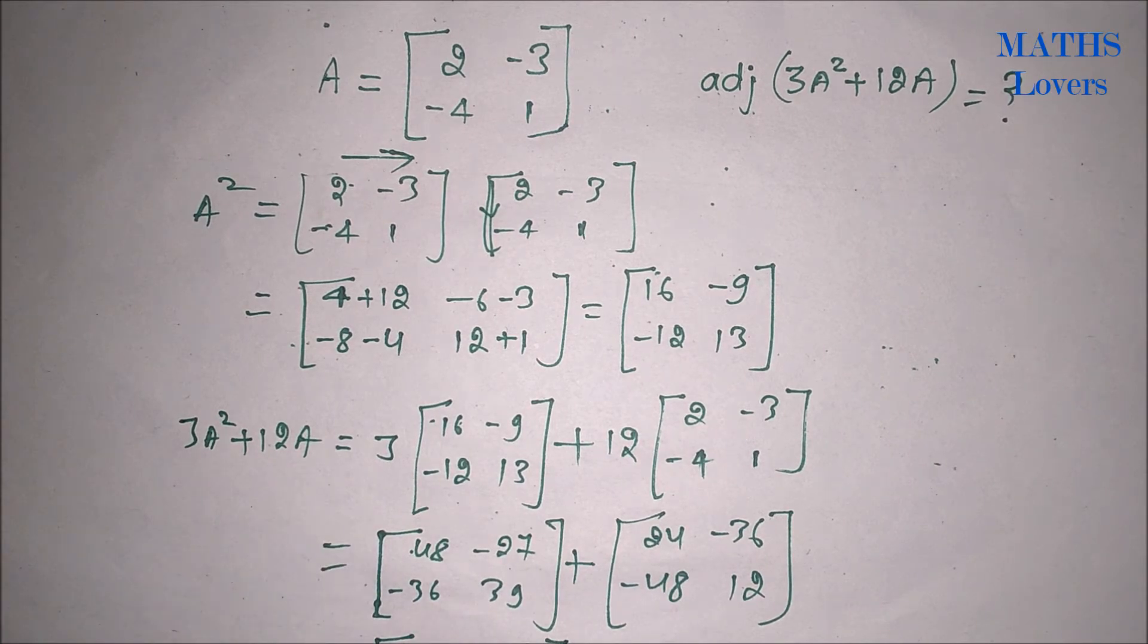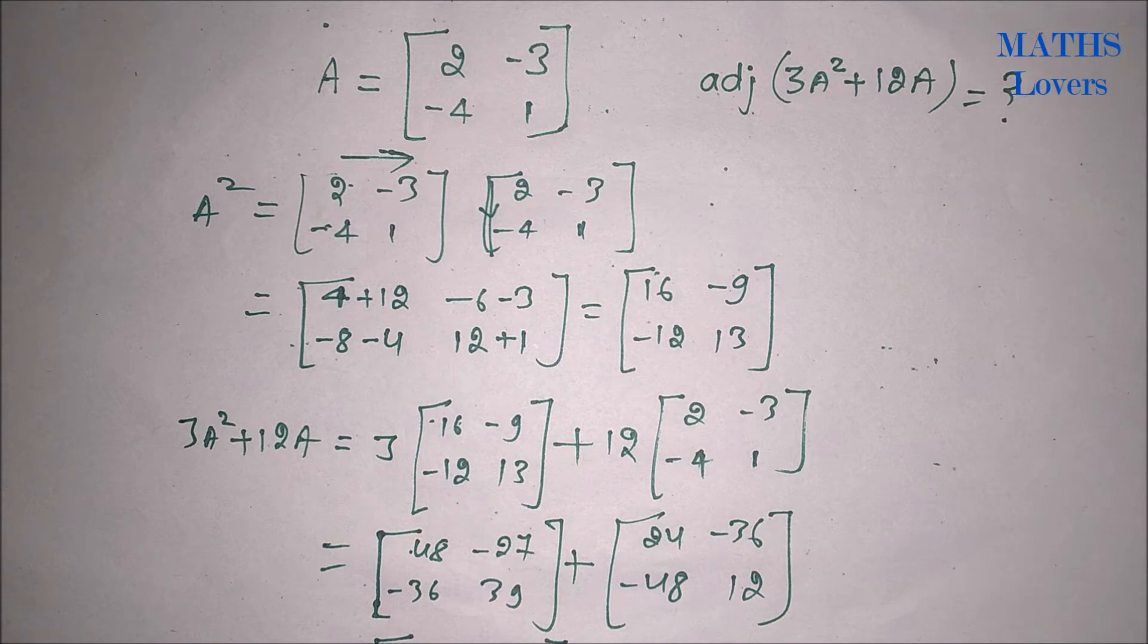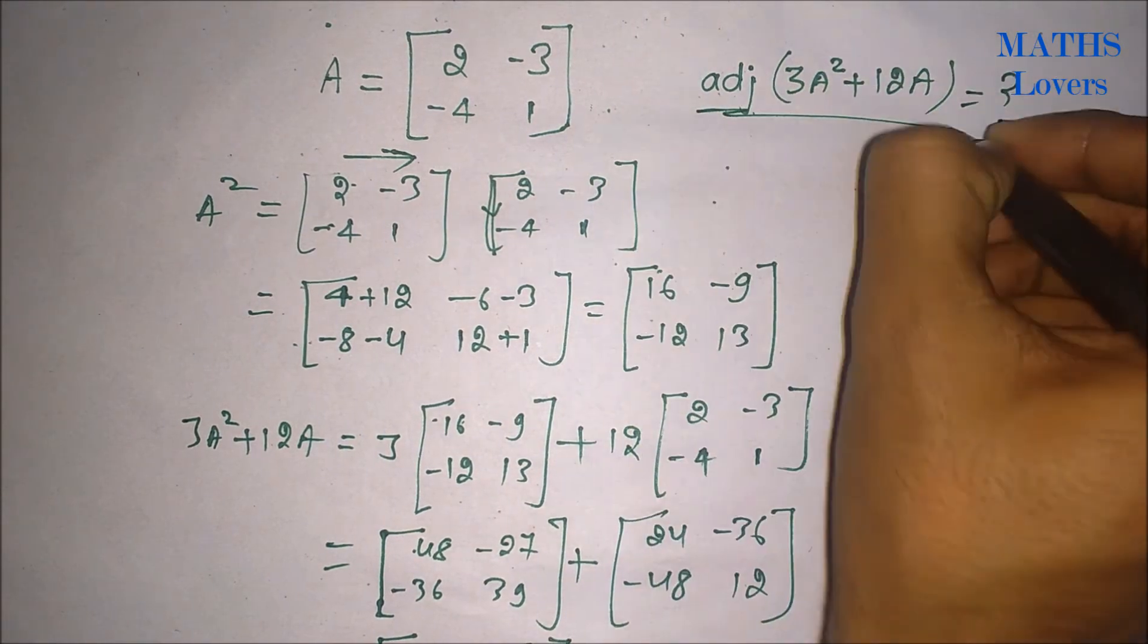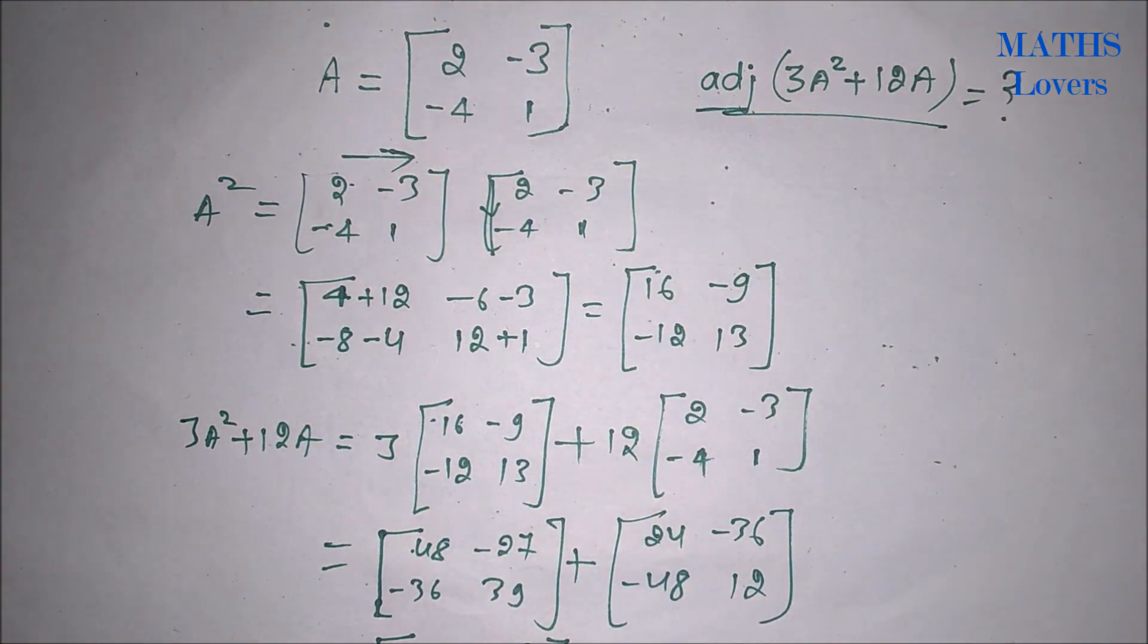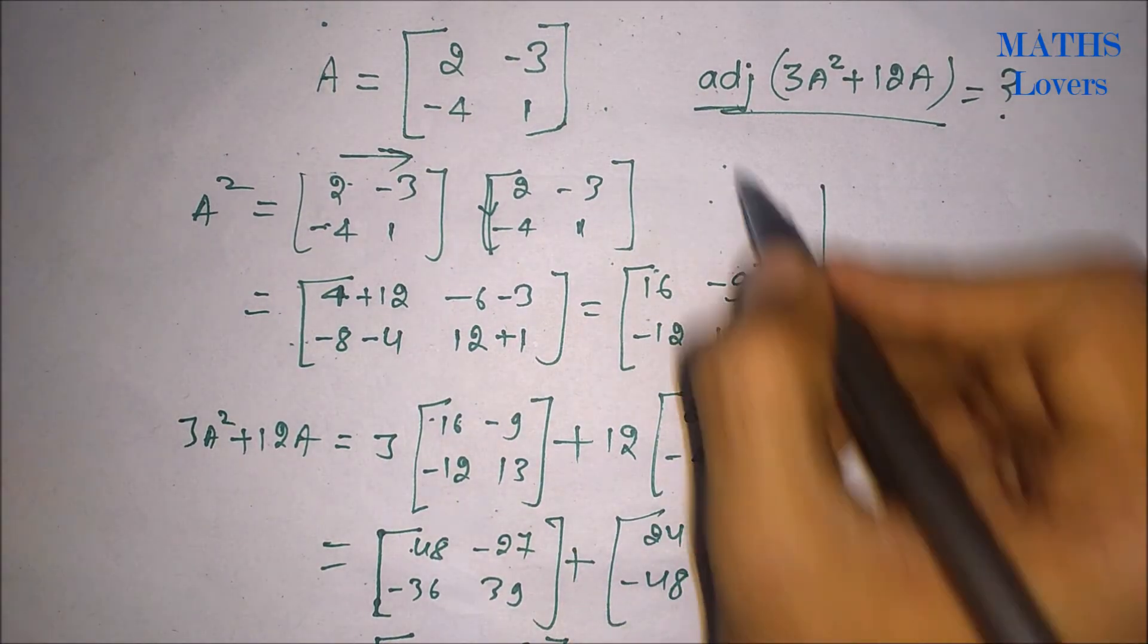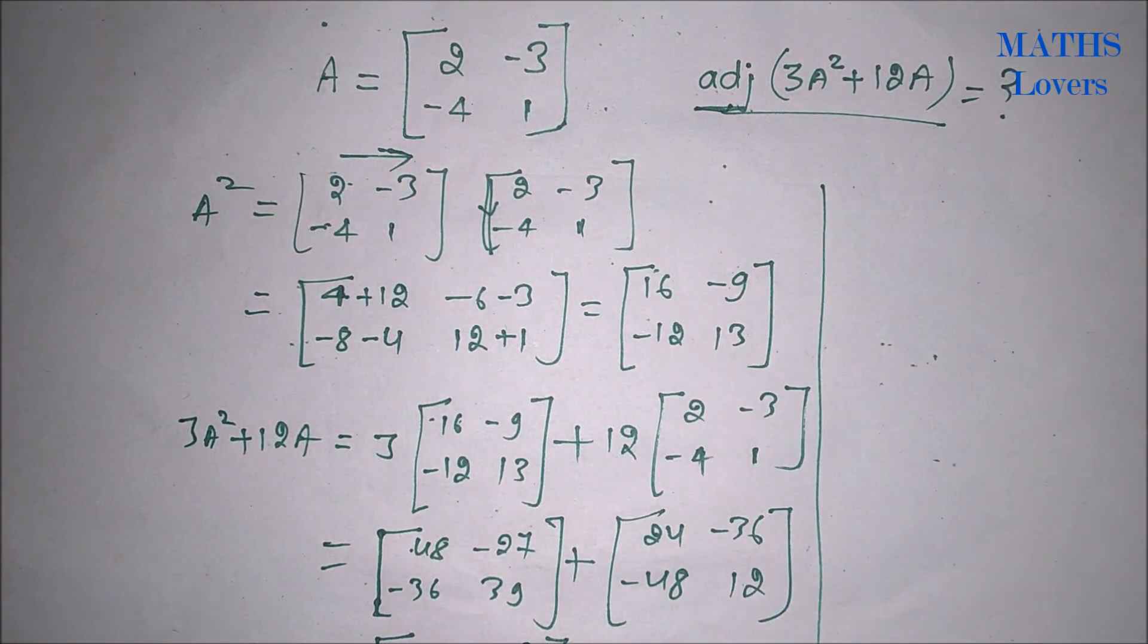It is also given in the answer choices. So here we can see that one of the options is also this. But we want adjoint of A, so never confuse that and tick answer D. Further we have to find the adjoint. Adjoint is the transpose of cofactor matrix.